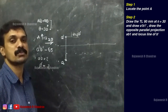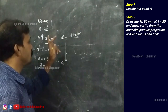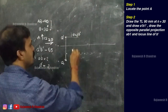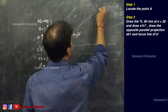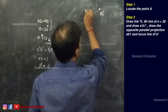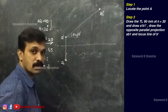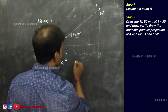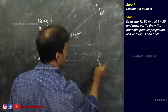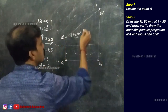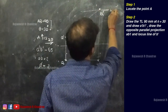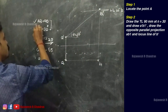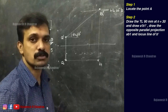At an inclination of theta equal to 30 degrees and a length of 90 mm, we can mark the front view of the true length, which is A dash B1 dash. Once we obtain A dash B1 dash — the true length — its opposite parallel projection A B1 can be marked, and the locus line of B dash can also be marked.